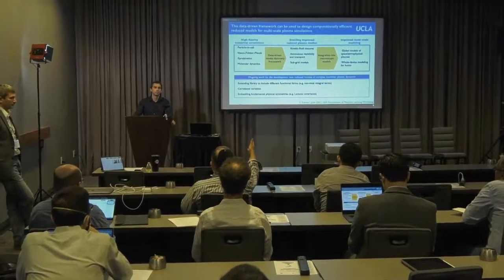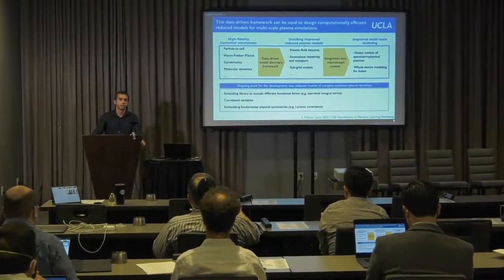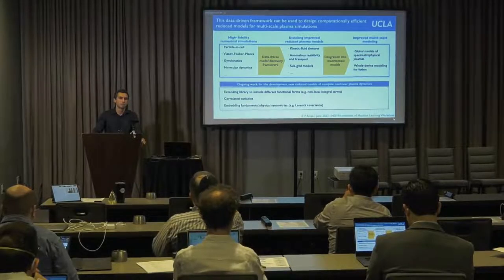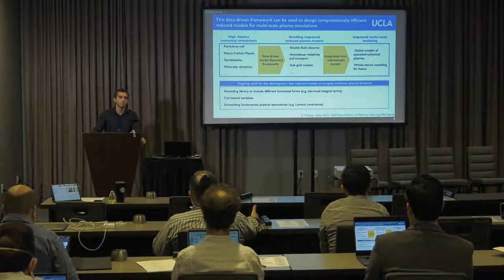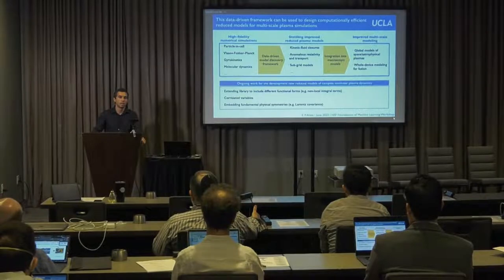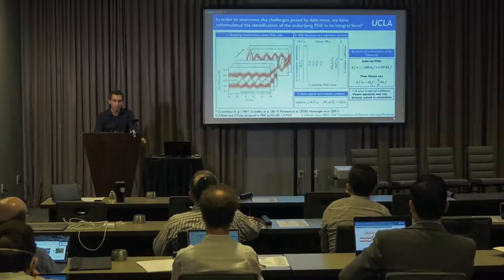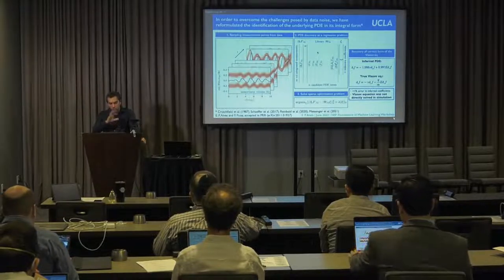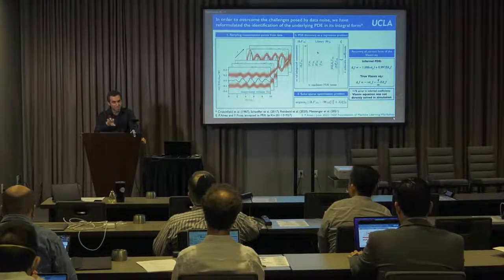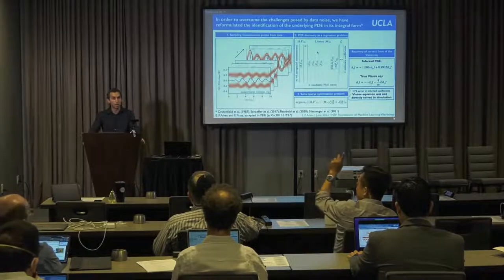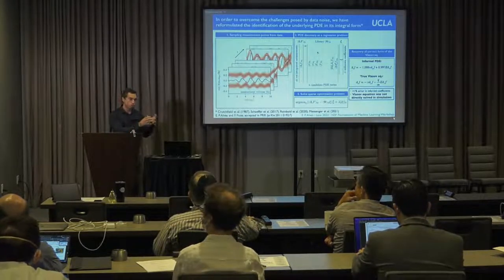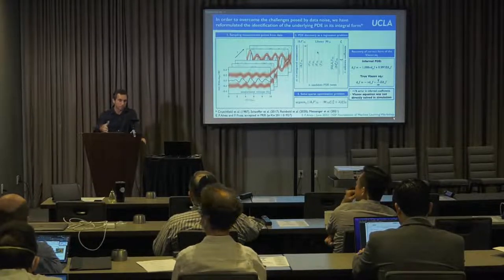When you derive, say, the Vlasov equation or whatever case you talked about — do you assume a priori that you know the form of that equation and take the best choice of coefficients, or do you learn the form of that equation without assuming it ab initio? In some way, a lot of information is encoded in the library of candidate terms, which is strongly informed by domain knowledge of the problem. This whole procedure hinges on constructing this space of possibilities in an appropriate way, and this is indeed one of the challenges when trying to develop reduced descriptions of problems we have a poor understanding of.